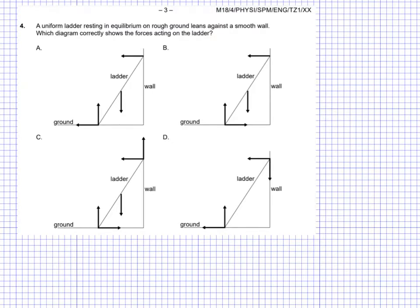Hello everyone, we're back here with page 3 of the IB Paper 1 exam for May 2018. Here we have question 4: a uniform ladder resting in equilibrium on rough ground, leaning against a smooth wall. Which diagram correctly shows the forces acting on the ladder?